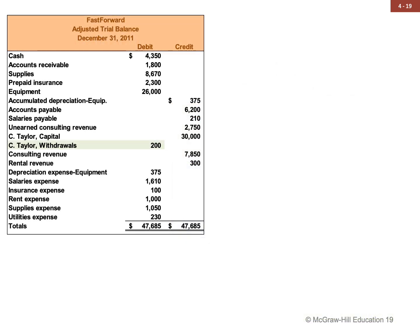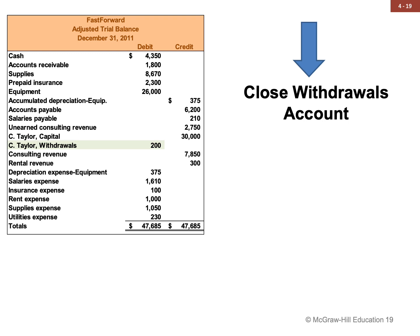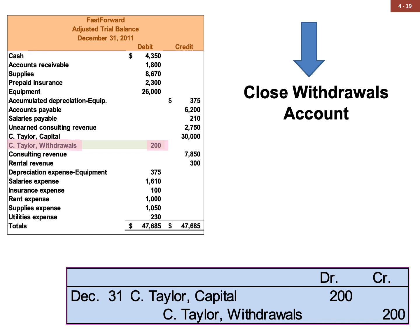The last closing entry is to close the withdrawal account. In the adjusted trial balance, withdrawals is 200 on the debit side. Since the normal balance of withdrawals is debit, to close it we record it on the credit side: capital to withdrawals 200. We use capital (not income summary) because income summary was already closed in step 3. Withdrawals is always the last account closed when preparing closing entries.